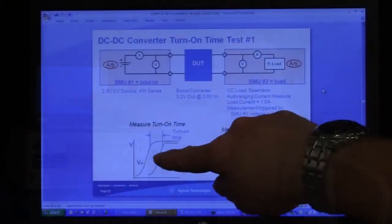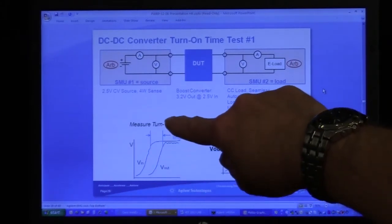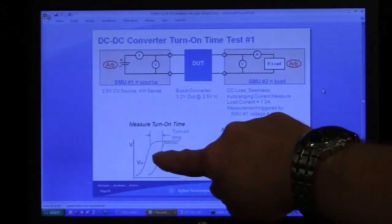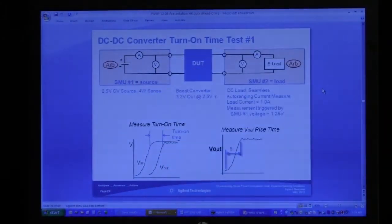Now the test that we're actually going to be doing is a turn on time test. So we're going to turn on the input side of the DC to DC converter and measure how long it takes for the power to come out of the DC to DC converter. And of course that startup time is a critical measurement for anyone who's doing DC to DC converter design, because the faster it starts up the more efficient it can be in its operation.